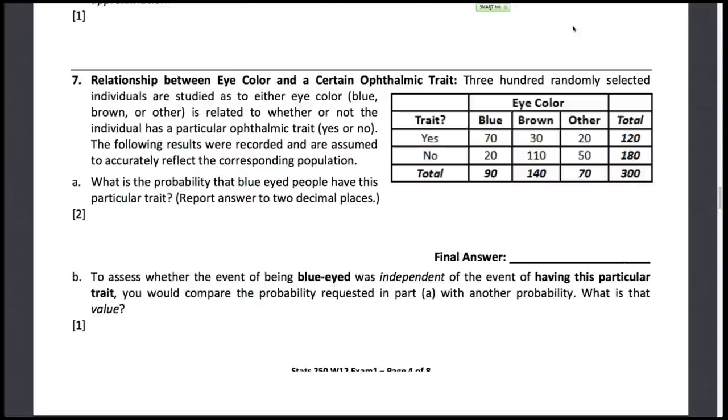So 300 people were selected and they were studied for their eye color and whether or not they have this trait. So the following results were recorded in this table that we have and are assumed to accurately reflect the corresponding populations. These are all sample values.